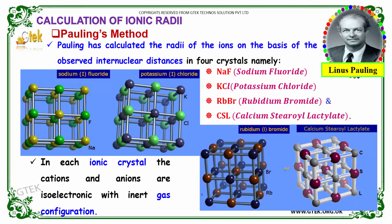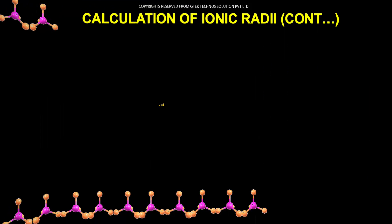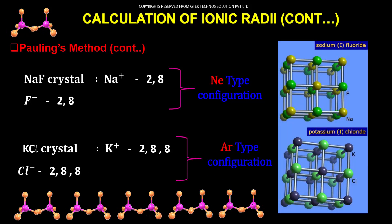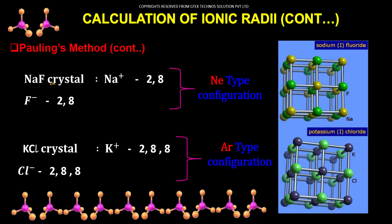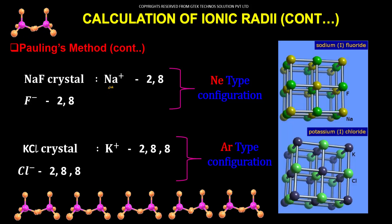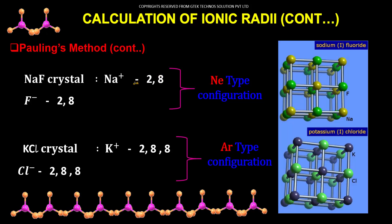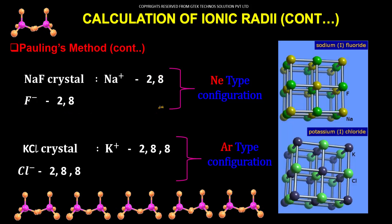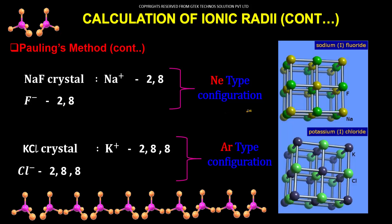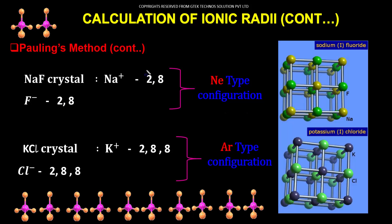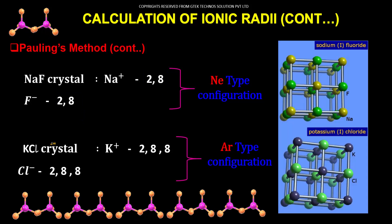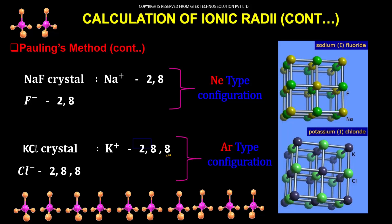In each ionic crystal, the cations and anions are isoelectronic with inert gas configurations. Here is Pauling's method. In the Sodium Fluoride crystal, Na+ has the configuration 2,8 and Fluorine has 2,8 — this is the Neon-type configuration. For Potassium Chloride, you get 2,8,8 for both K+ and Cl−, which is the Argon-type configuration.